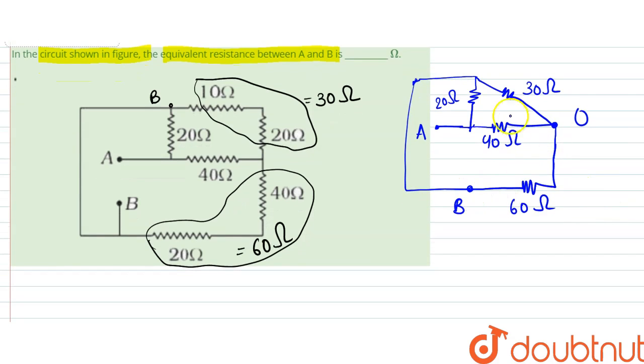So between B and O, there are three resistances. This is also B. So B and O, 30 ohms. And there is one more.